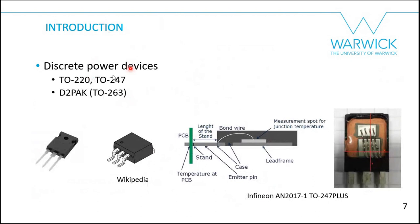For discrete power devices, we have the traditional TO-220 and TO-247, and also SMD devices like the TO-263 and D2PAK. These are probably the most common power devices you will have worked with. They are wire-bonded devices — the chip, either silicon or silicon carbide, is attached to a copper lead frame and bond wires connect the chip to the leads of the package.